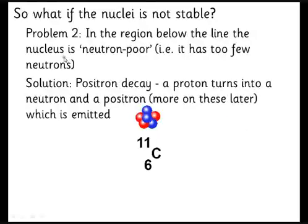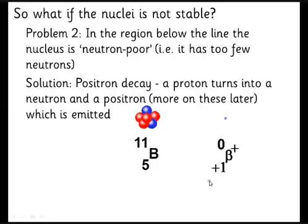Here's our second one: neutron-poor, so too few neutrons. The solution for the nucleus is to turn a proton into a neutron. We start with carbon-11, it releases this particle called a positron. If you thought that all matter was protons, neutrons, and electrons, you've just met your first particle which isn't one of those three. This is a positron, like a positive electron. It's actually an antiparticle.